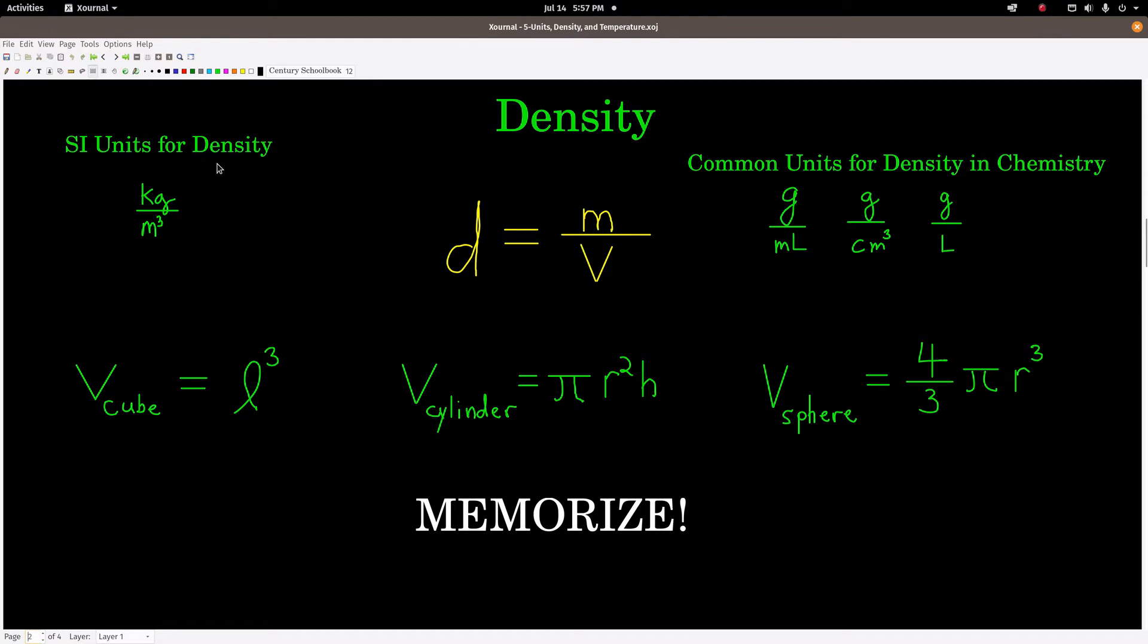These are the common units that we use for density in chemistry, and these are the SI units. In chemistry, we'll see grams per milliliter, grams per centimeter cubed, and grams per liter, usually when we're dealing with gases. The SI unit is kilograms per meter cubed.